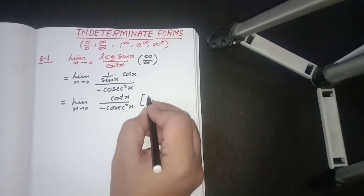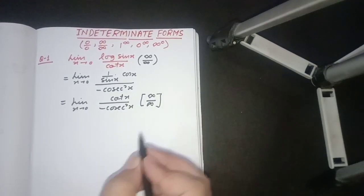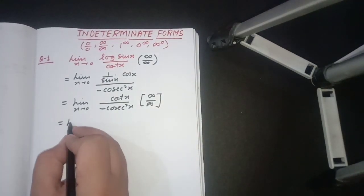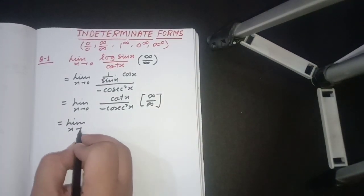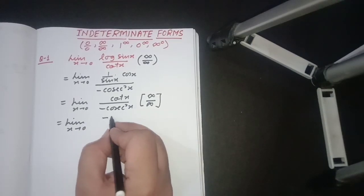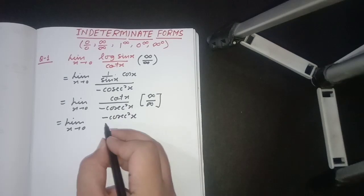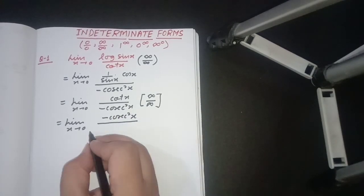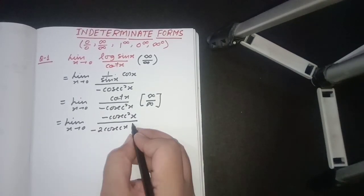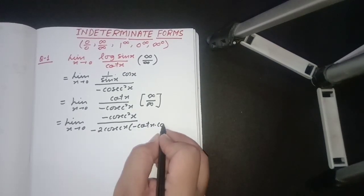Again we see that it is the form of infinity upon infinity, so we have to use L'Hôpital's rule again until the indeterminate form is removed. Differentiating the numerator and denominator again, it will come out as minus csc²x in the numerator, and minus cot x times csc x in the denominator.